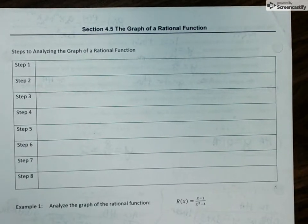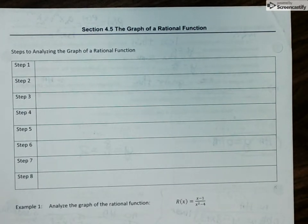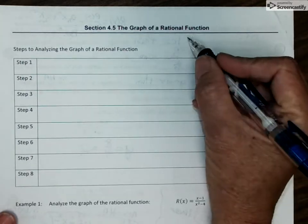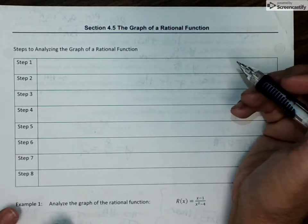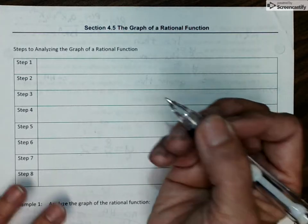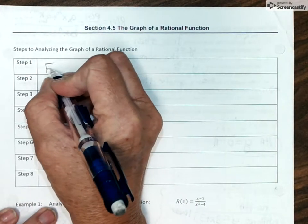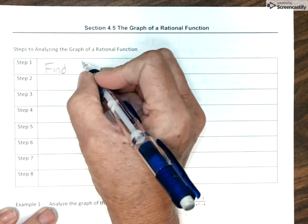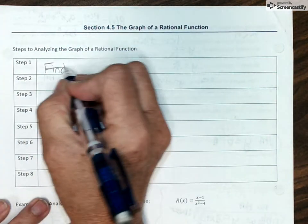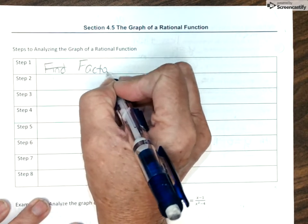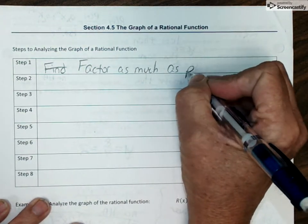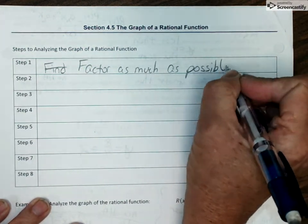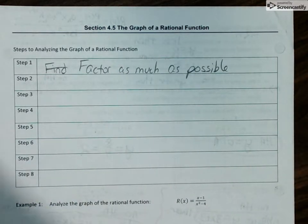Okay, welcome to section 4.5, graphing rational functions. The goal here is to be able to graph your function without using the calculator. So there are eight steps, and we're going to go ahead and get those all written down.